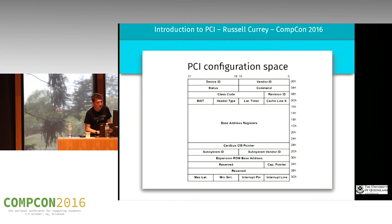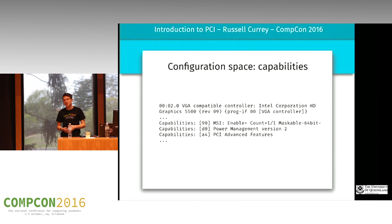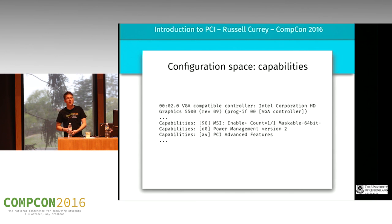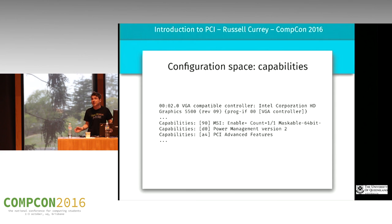The base address registers will tell you where exactly to look for other parts of the device. There's also a capability pointer which points to another region in config space listing capabilities. For example, the inbuilt graphics on my laptop reports capabilities including MSI for interrupts, power management version 2, and PCI advanced features. These are generic — they're not aimed at changing the function of a specific driver, but rather changing how an entire system interacts with these devices generically.